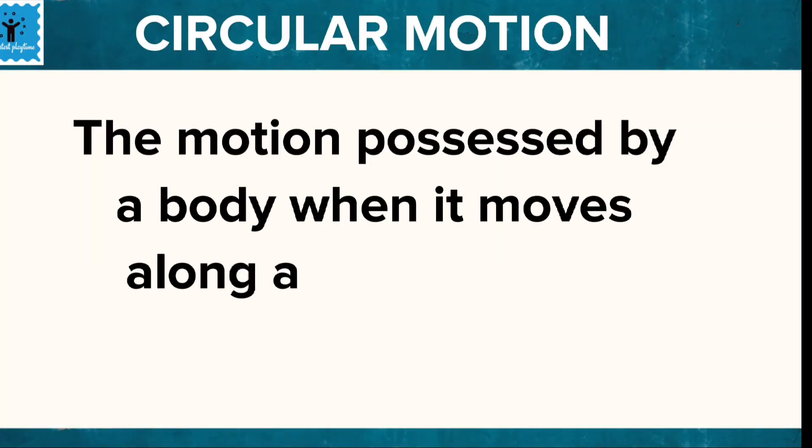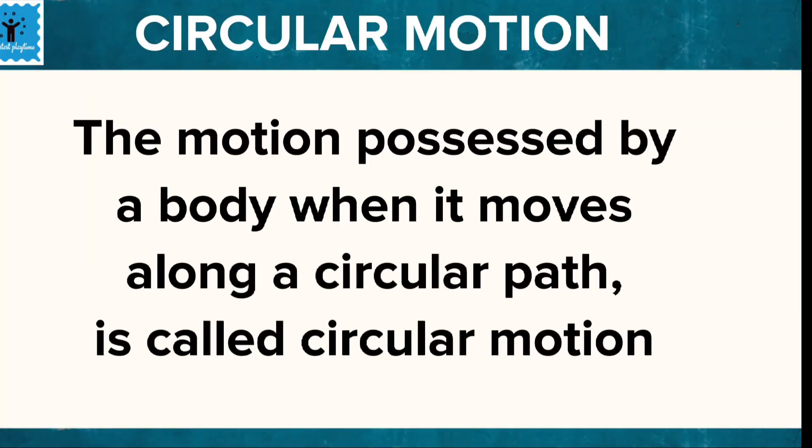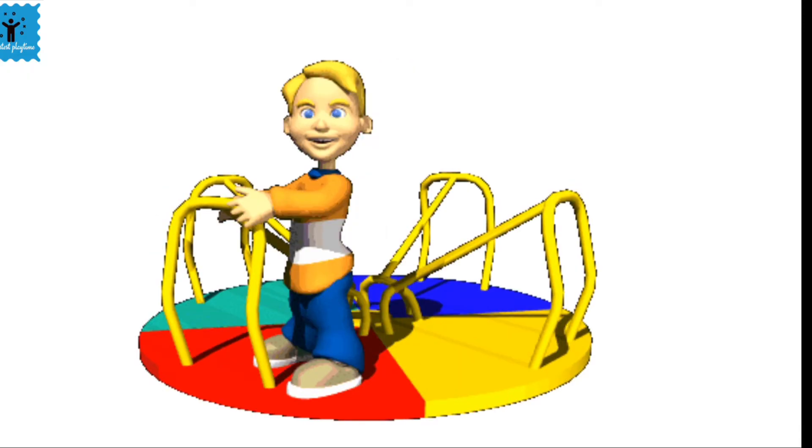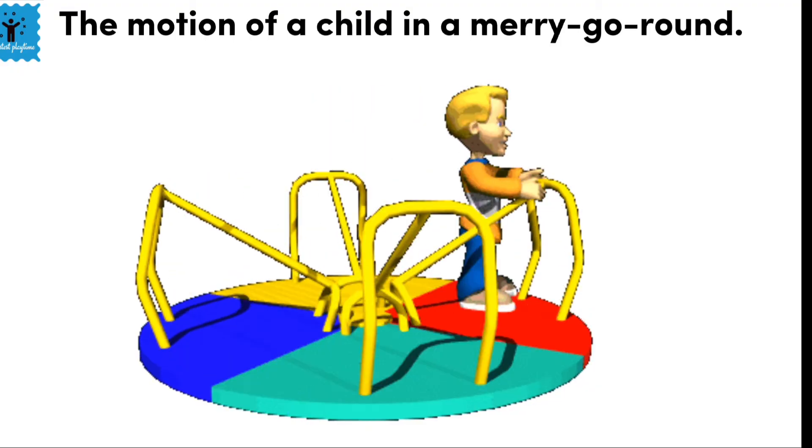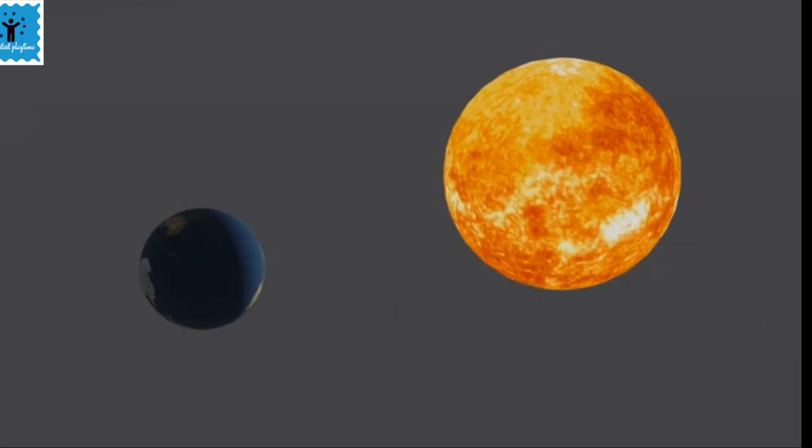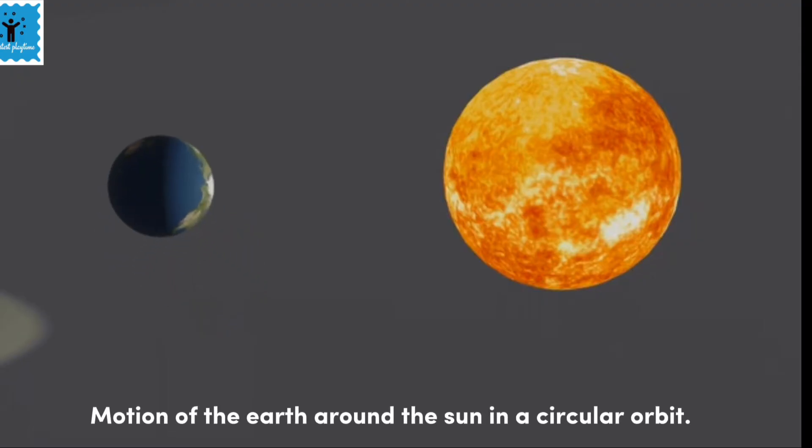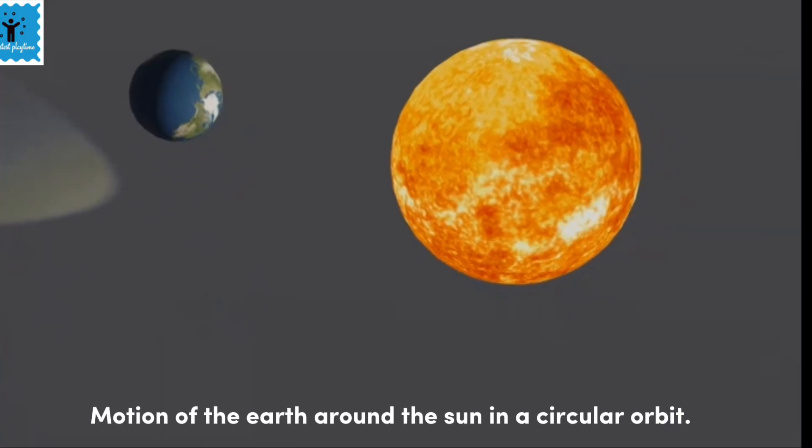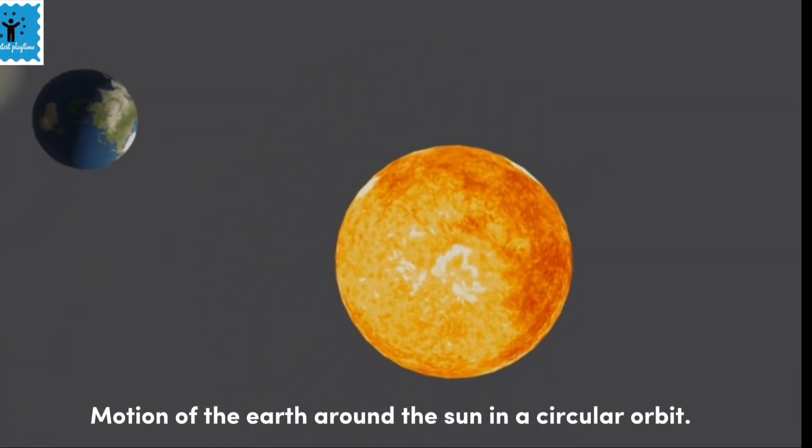If a body moves along a circular path, that motion is called circular motion. For example, the motion of a child in a merry-go-round or the motion of the earth around the sun in a circular orbit is an example of circular motion.